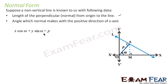If we have these two values, we can write the equation of this line L as x·cos(ω) + y·sin(ω) = p, where p is the length of the perpendicular from the origin to the line, and omega is the angle that perpendicular makes with the x-axis.